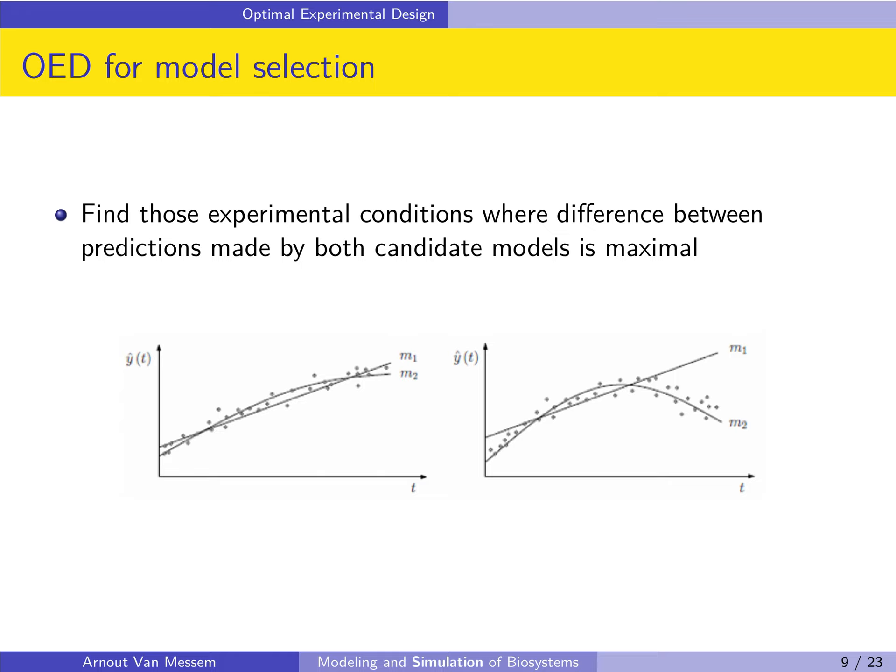On the right hand side, we clearly see a bigger difference between M1 and M2. They are still the same models but under different experimental conditions and so with different parameter estimations. And now we see that actually M2 is the model which follows the data, but M1 clearly is not. So we want to maximize the difference between the candidate models in order to make an easier choice between both models.